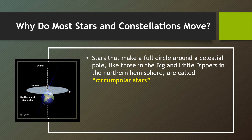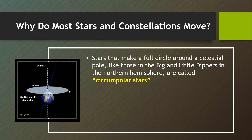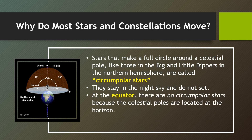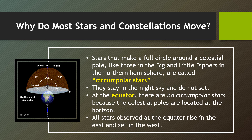Stars that make a full circle around the celestial pole, like the poles in the Big and Little Dippers in the northern hemisphere, are called circumpolar stars. They stay in the night sky and do not set. At the equator, there are no circumpolar stars because the celestial poles are located at the horizon. All stars observed at the equator rise in the east and set in the west.